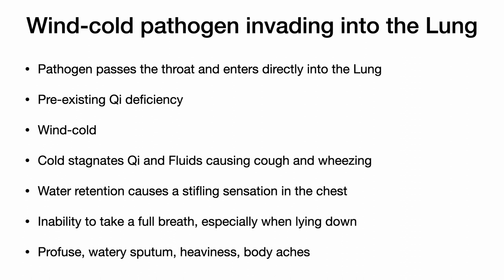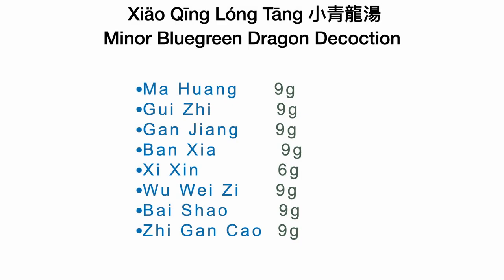However, the pathogen can penetrate through the throat barrier and enter directly into the lung in some cases. This is especially characteristic for people with pre-existing qi deficiency. In this case, the pathogen does not change its cold nature and enters directly into the lung. Cold causes stagnation of qi and fluids in the lungs, resulting in cough and wheezing. Water retention in the chest causes a stifling sensation and inability to take a deep breath, especially when lying down. The patient would experience aversion to cold, absence of sweat, profuse watery sputum, heaviness, and body aches. The ruling formula for this presentation is Xiao Qing Long Tang — minor blue-green dragon decoction.